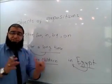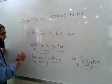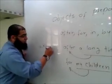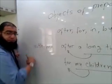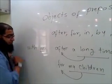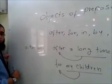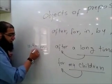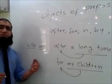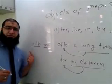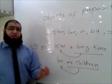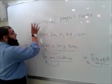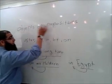Sometimes we have a pronoun. Like when I say 'with me' — 'me' is a pronoun. This pronoun comes after a preposition, so it's an object of a preposition. This is what we mean by object of a preposition.